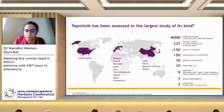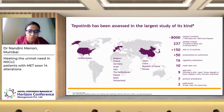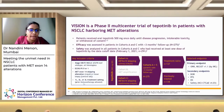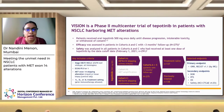Coming to tepotinib and its role in MET exon 14-mutated non-small cell lung cancer: tepotinib is a small molecule TKI designed to target both MET exon 14-mutated cancers and those with MET amplification. The VISION study evaluated the efficacy of tepotinib in patients with non-small cell cancer harboring MET alterations. This was a phase 2 trial.